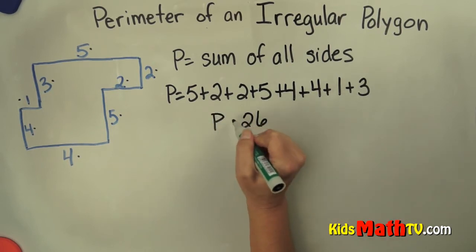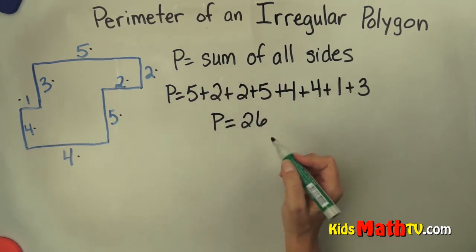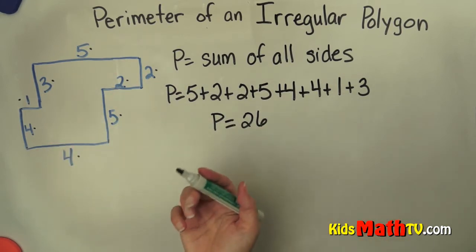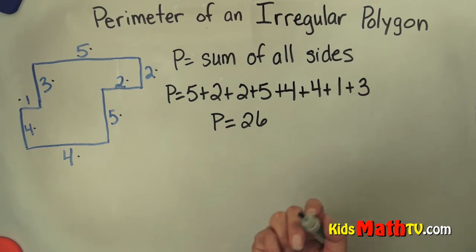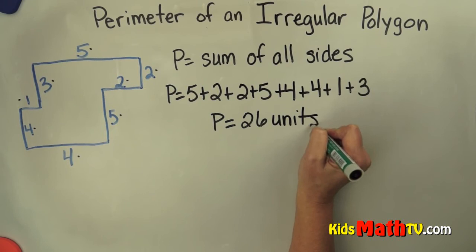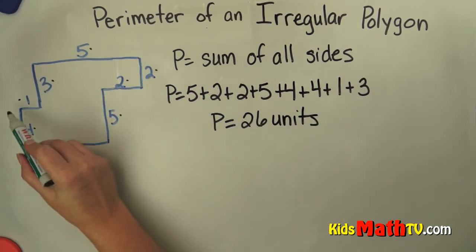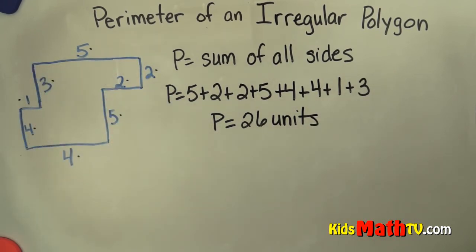So the perimeter of this figure is 26. And I don't know if it's inches or meters or that sort of thing, so I'm simply going to name them units. So it is 26 units all the way around this figure.